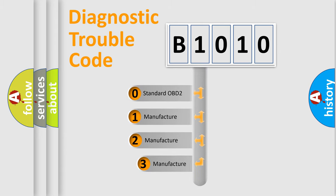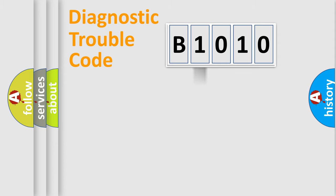If the second character is expressed as zero, it is a standardized error. In the case of numbers one, two, three, it is a more prestigious expression of the car specific error.